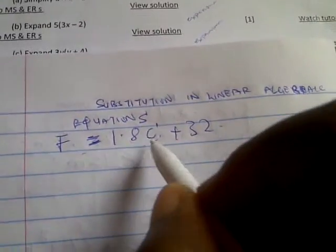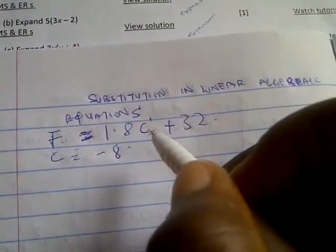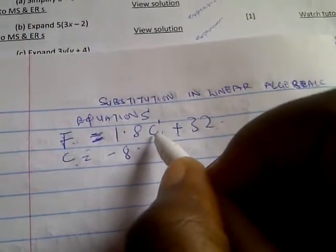It has two unknowns. Now we're told that C is equal to minus 8, so find the value of F. This is very easy because you just go to wherever you see C and put minus 8.